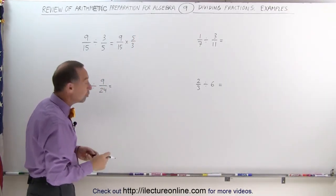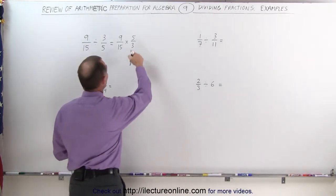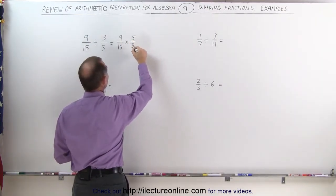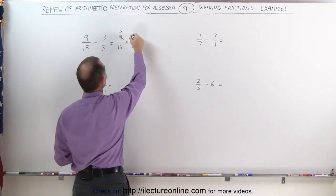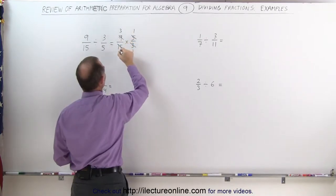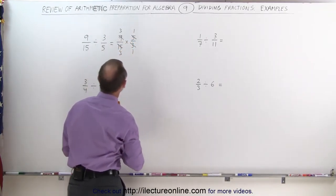Now you can see that you can do some simplification before you multiply things together. We have a 3 and a 9, so 3 divided by 3 is 1, 9 divided by 3 is 3. With 5 and 15, 5 divided by 5 is 1, 15 divided by 5 is 3.